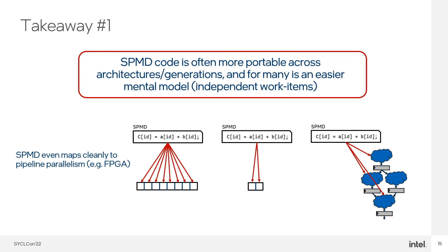The first takeaway is that SPMD code — in which multiple work items of your program together occupy the data parallel hardware — is often an easier mental model to work with and tends to be more portable across different architectures or generations of an architecture. SPMD also maps nicely to a wide variety of data parallel architectures going well beyond just vector compute, including pipeline spatial architectures like those often constructed on FPGAs.